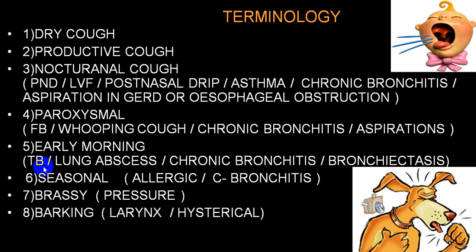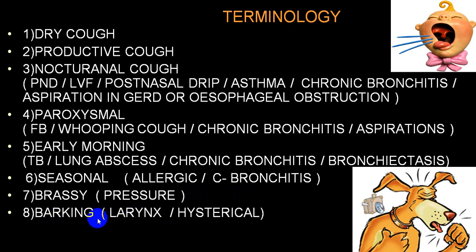Early morning cough is very frequently seen in lung abscess, tuberculosis, chronic bronchitis, and bronchiectasis. Seasonal variation is seen in allergic chronic bronchitis. A brassy cough involves increased pressure in the thoracic cavity. A barking cough involves the larynx with a characteristic barking sound, seen also in hysterical individuals. Other types include dry, productive, nocturnal, paroxysmal, early morning, seasonal, brassy, and barking cough.